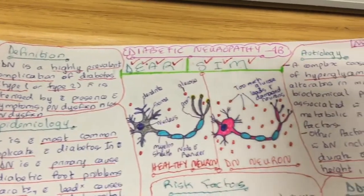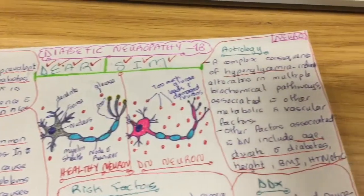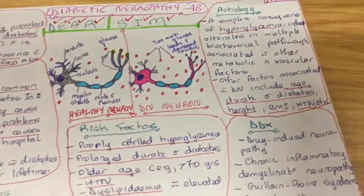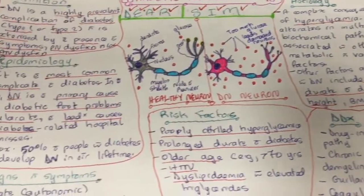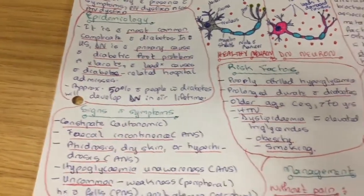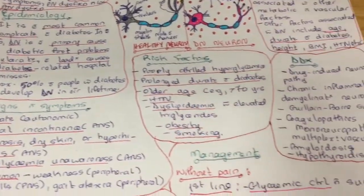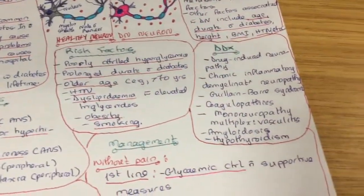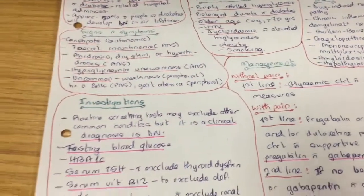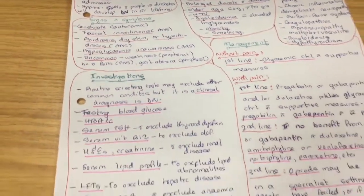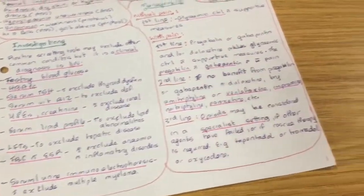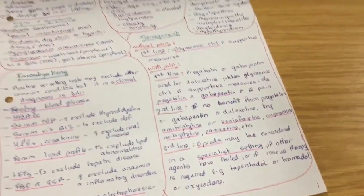And this is the finished poster — so this is diabetic neuropathy. I've put in all the necessary information that I got from the BMJ Best Practice website. First condition down, many more to go.